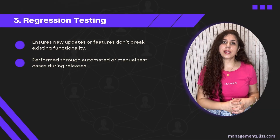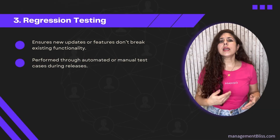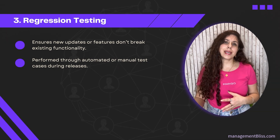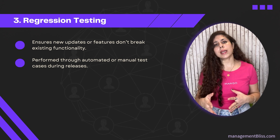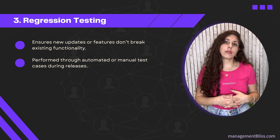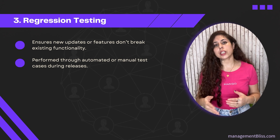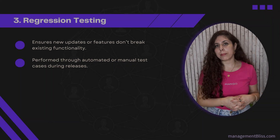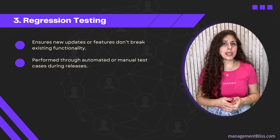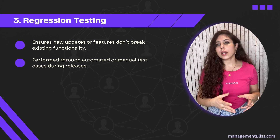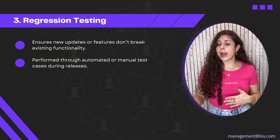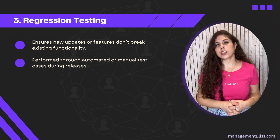Third is regression testing. Regression testing is essentially a set of automated or manual test cases designed for the application. They are useful when releasing a new version of the app or adding new functionality. In such cases, we go through all regression test cases to make sure the new changes have not adversely impacted the existing system functionalities.